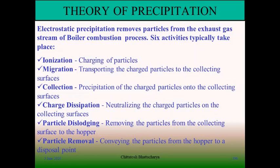ESP removes particles from the exhaust flue gas of boiler combustion products. There are six specific stages in the ESP for precipitation of dust particles: first, ionization — charging of particles; second, migration — transporting the charged particles to the collecting surfaces; third, collection — precipitation of charged particles onto the collecting plates; fourth, charge dissipation — neutralizing the charged particles on the collecting surfaces; fifth, particle dislodging — removing particles from the collecting surface to the hopper; sixth, particle removal — conveying the collected dust in the hopper to a disposal point.